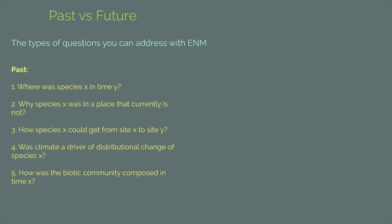Based on these differences, you can address different questions for the past than for the future. For the past, you may want to know where a species was in a specific time period, and how that species that was in some place in a remote time came to be in a different place in recent times. You can investigate how that species responded and how much climate was a factor in shifting distributions. If you model more than one species, you can ask questions regarding biotic community composition — for example, what species lived with what other species at a specific time in the past.